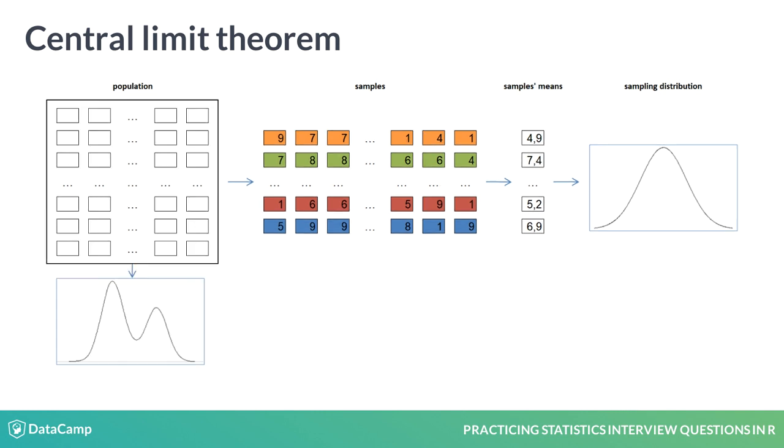The power of the Central Limit Theorem is that it works with any distribution. Whether the distribution is bimodal or skewed, the theorem holds.